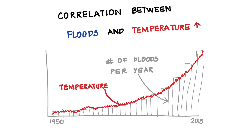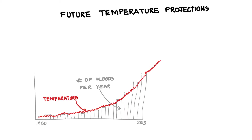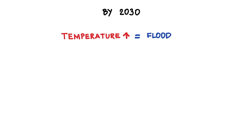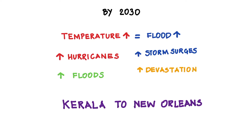Especially in recent years, the frequency has risen sharply. Projecting ahead, a 1.5 degrees Celsius temperature increase is considered by many scientists to be locked in as early as a decade from now. By the end of the century, if we don't dramatically cut back our emissions, we potentially face a 6 degrees Celsius increase. By 2030, as temperatures rise, the frequency and intensity of floods will also rise — expect to see more intense hurricanes, higher storm surges, more floods, and greater devastation from Kerala to New Orleans.